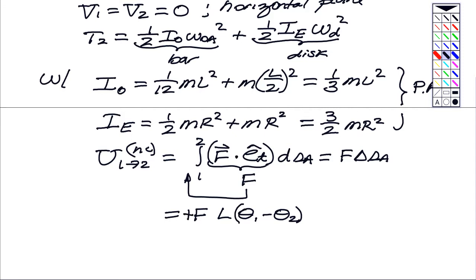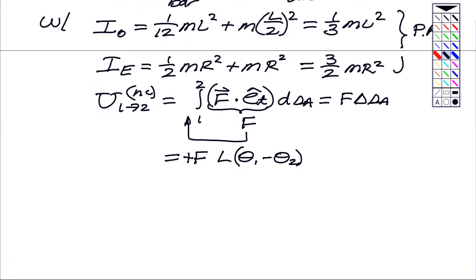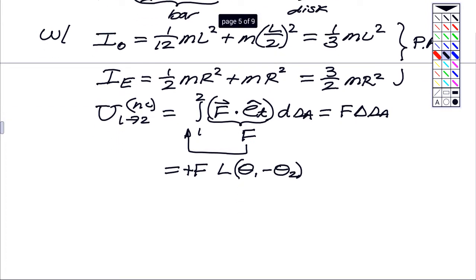So we have T, and we have the work. What we need to do is to be able to relate omega OA and omega D, and in the end, we need to write that in terms of the speed of C. That's all what kinematics is about.